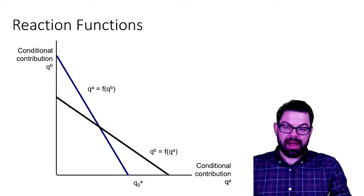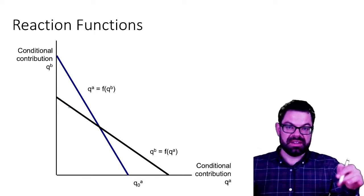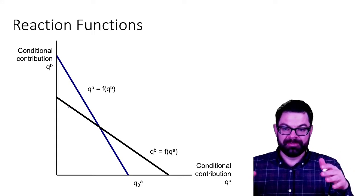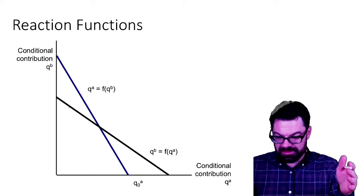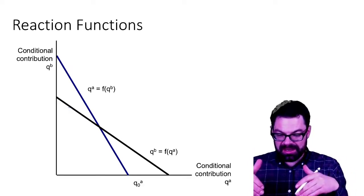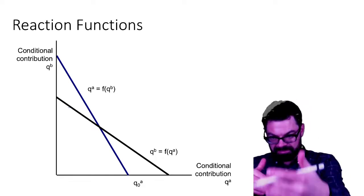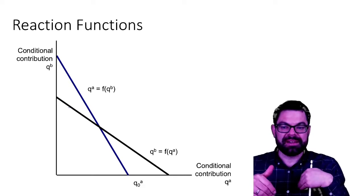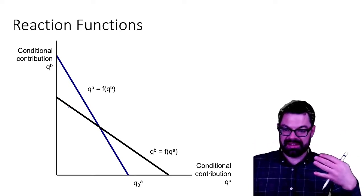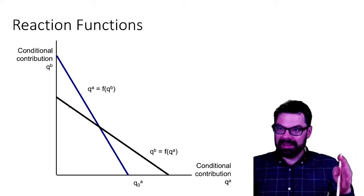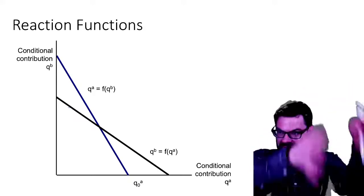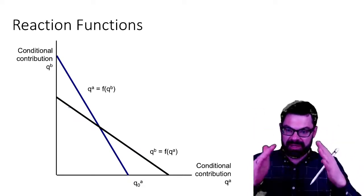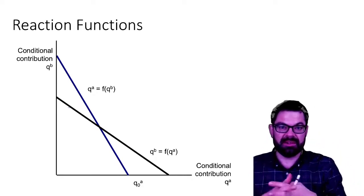Now let's see how those two players' strategies interact when they are both on their optimal reaction functions. Their reaction functions represent, from each player's perspective, the optimal action given what the other player contributes. These two players choose simultaneously — each solves: if player A does that, I do this; if player A does something else, I do something else. We then look at the optimal responses for each player simultaneously. That's what we do in the analysis of a Nash equilibrium.